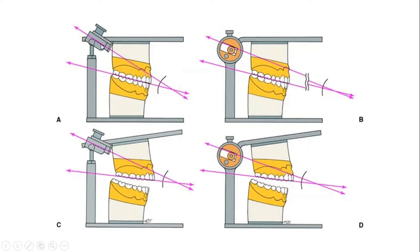In the arcon articulator, there is an angle formed between the condylar guidance and the occlusal plane. When we open the articulator, this angle remains the same because the entire assembly — the maxillary arch, occlusal plane, and condylar guidance — is connected to one component. The relationship of the maxillary arch to the condylar guidance is therefore constant. In the non-arcon articulator, however, as soon as we open the articulator, the angle between the occlusal plane and the condylar guidance reduces.